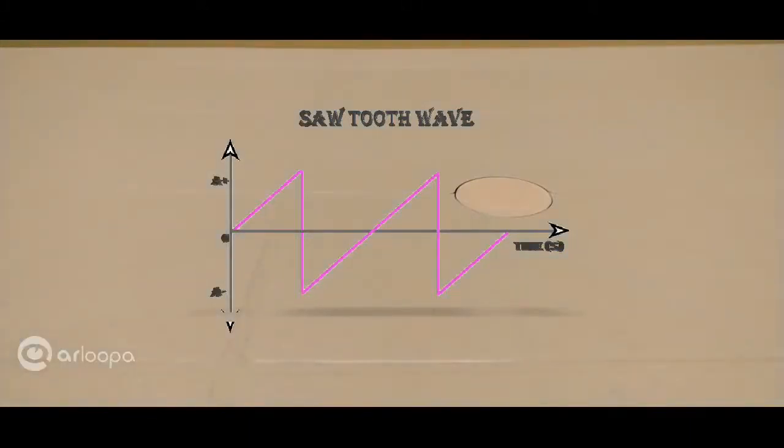Now sawtooth waves are rich in harmonics. They have both odd and even harmonics as opposed to square waves and triangle waves which only have odd harmonics.